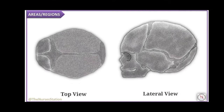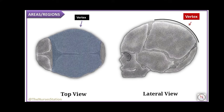First, we will talk about the areas of the skull. The skull is arbitrarily divided into several zones of obstetrical importance. These are the vertex — a quadrangular area bounded anteriorly by the bregma and coronal sutures, behind by the lambda and lambdoid sutures, and laterally by the lines passing through the parietal eminences.